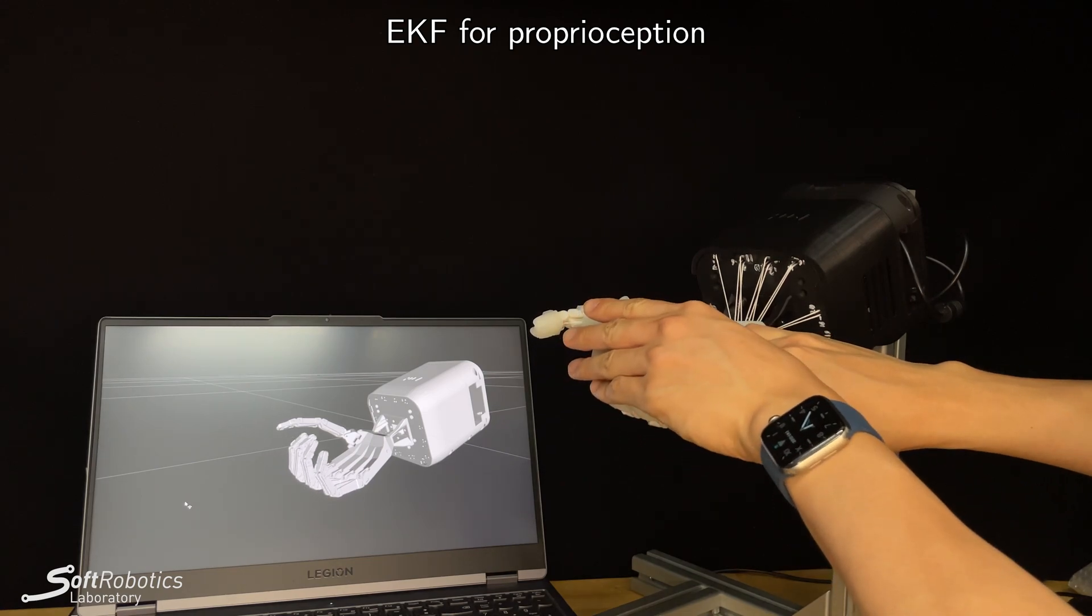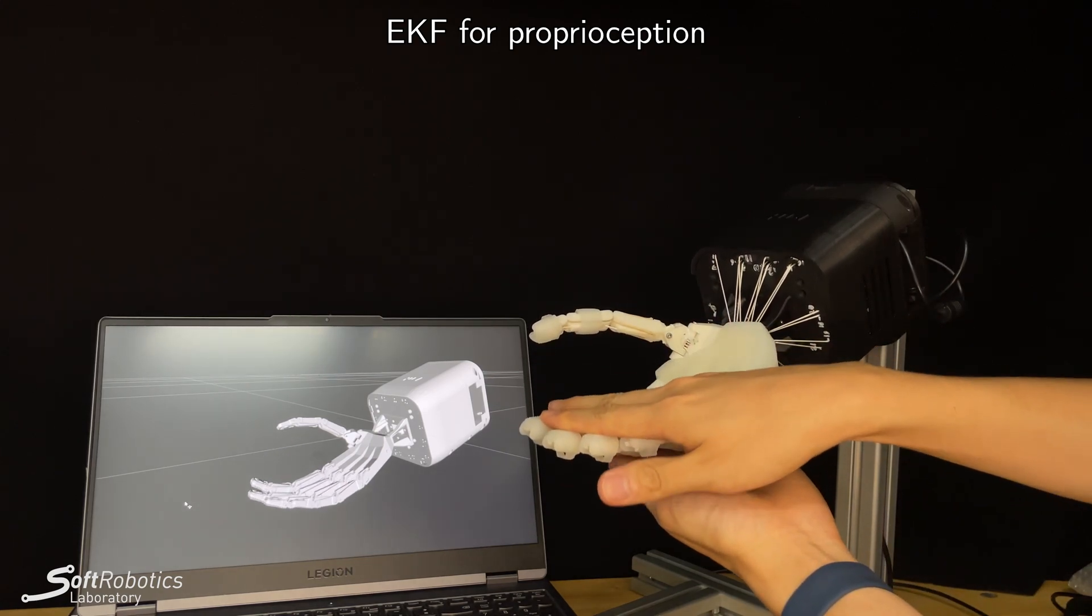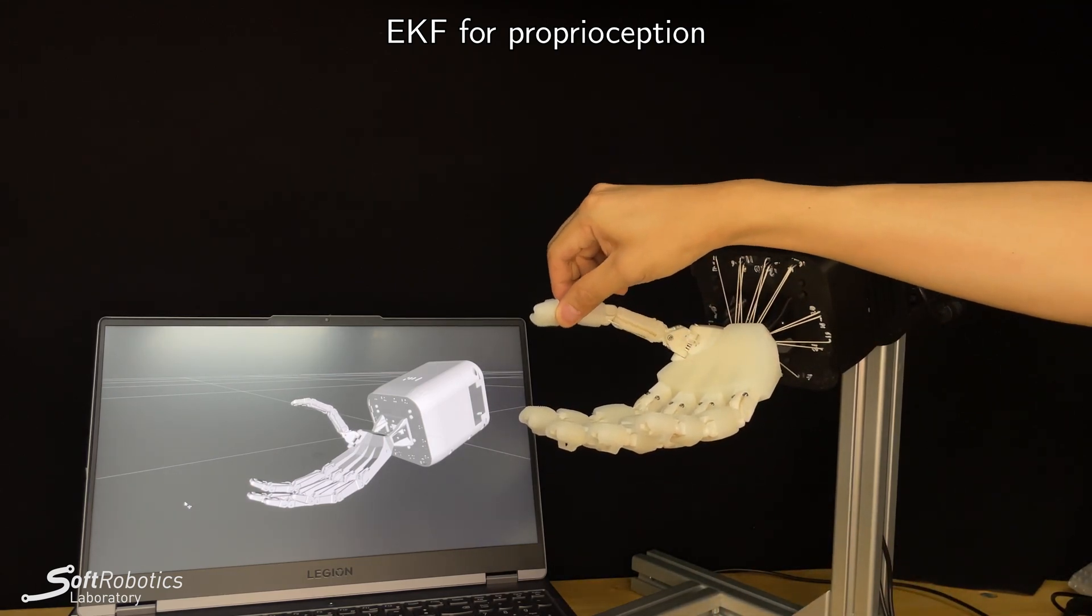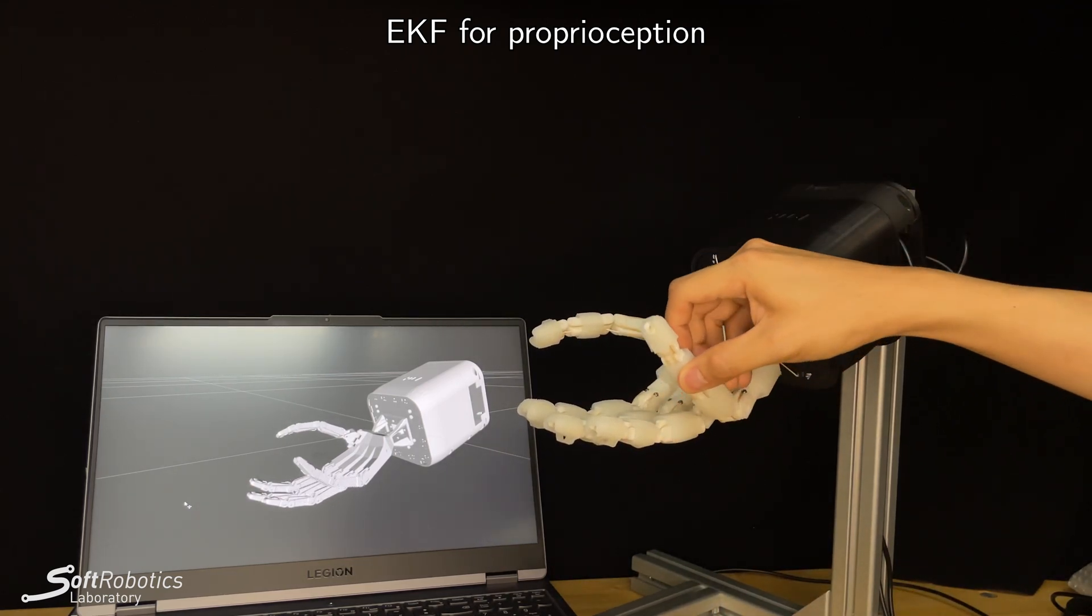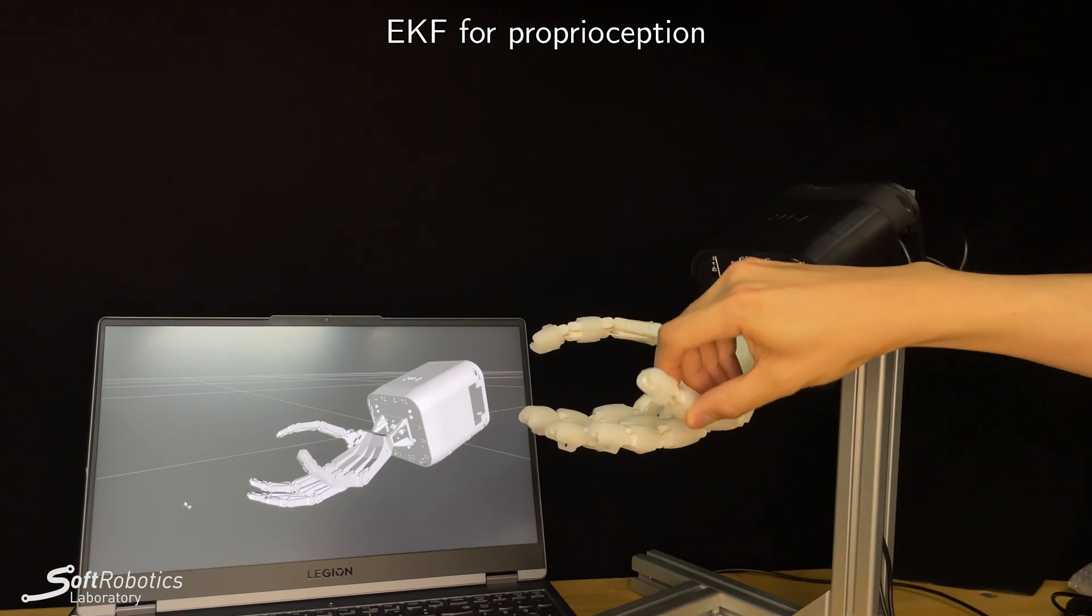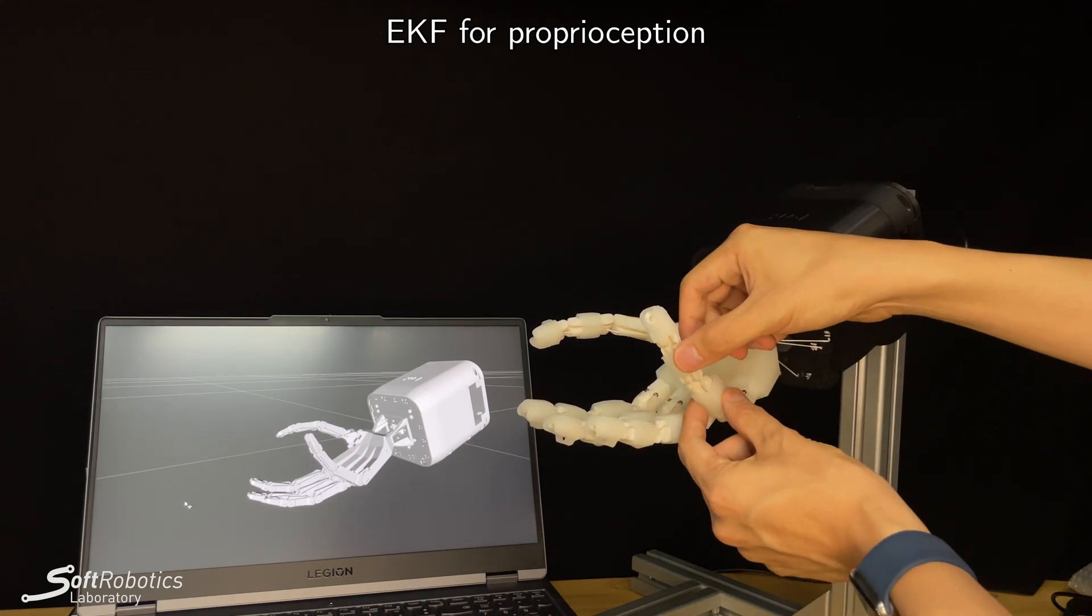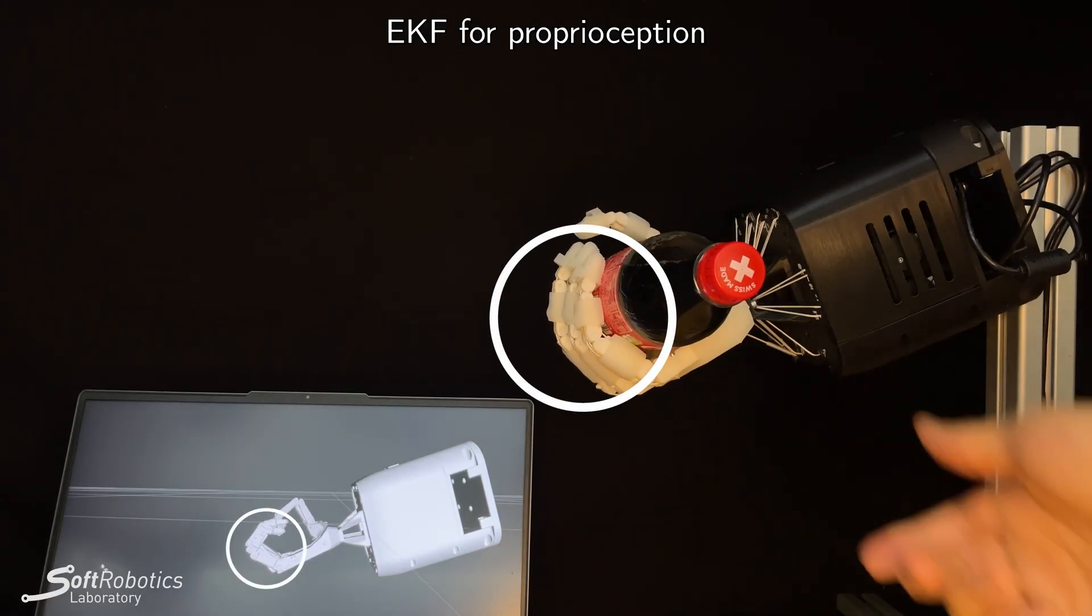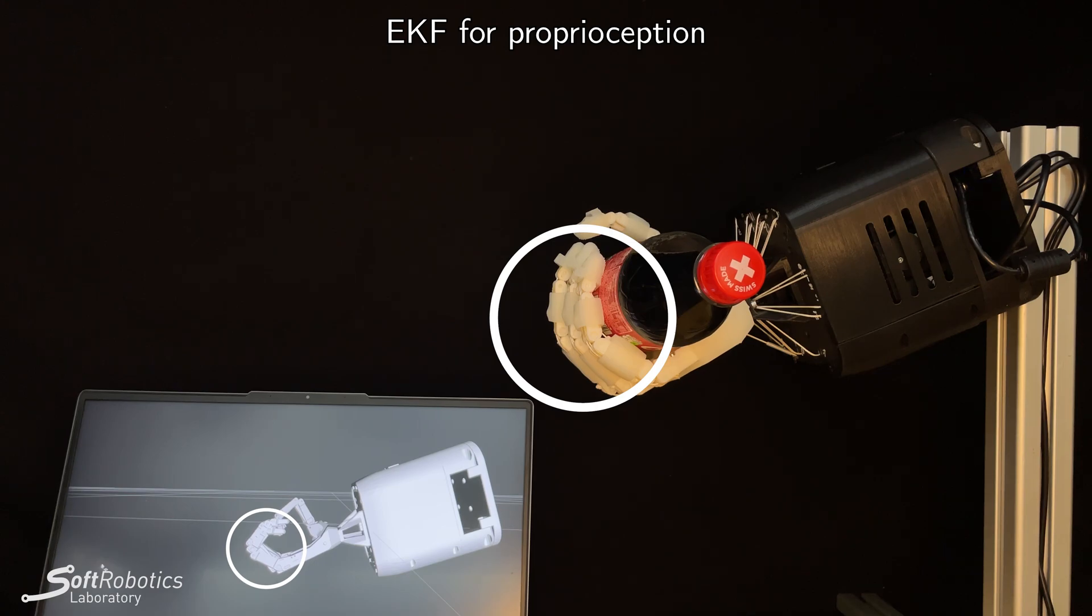This prototype of the hand does not contain joint angle encoders. Instead, the joint angles are estimated from the tendon length using an extended Kalman filter. However, its accuracy decreases in certain cases, such as when there is contact and the tendons are stretched.